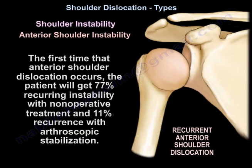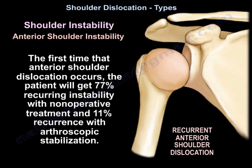When the first-time anterior shoulder dislocation occurs, the patient will have a 77% recurring instability rate with non-operative treatment, and an 11% recurrence rate with arthroscopic stabilization.